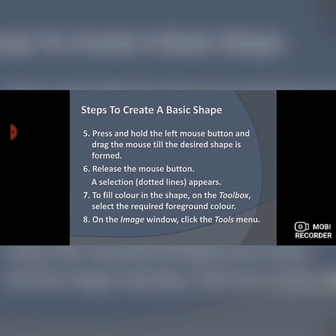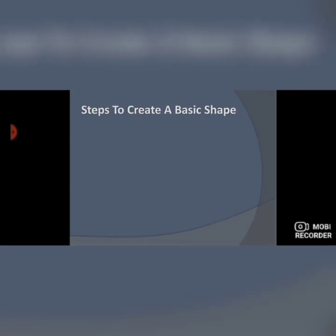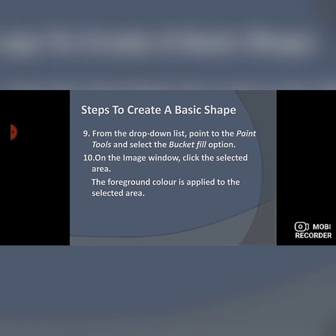To fill color in the shape, go to the Toolbox and select the required foreground color. Then on the Image Window, click the Tools menu, from the drop-down list point to Paint Tools, and select the Bucket Fill option. Then click on the selected area in the Image Window, and the foreground color you selected will be applied to that area.